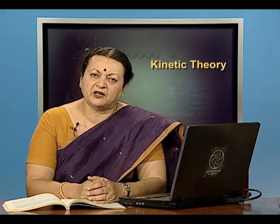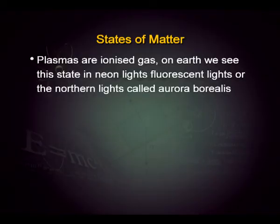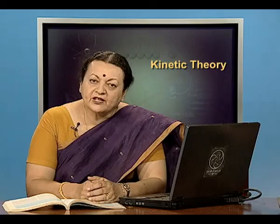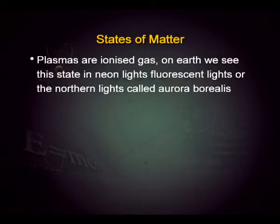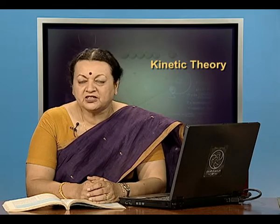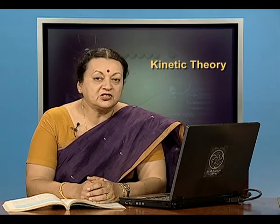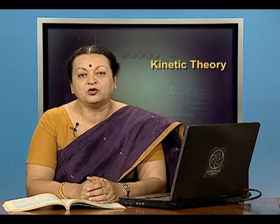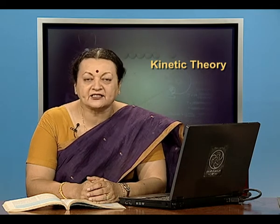What is plasma? Plasma is ionized gas. Where does it occur on earth? In neon tubes, fluorescent tubes and the northern lights, which is aurora borealis. In order to understand each of these states, as material we would be only using solid, liquid and gases.